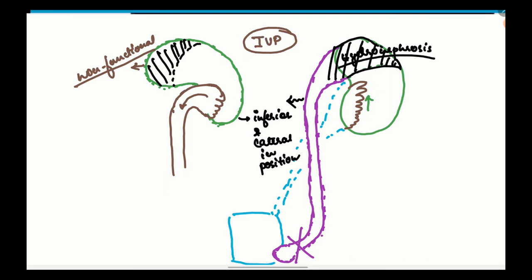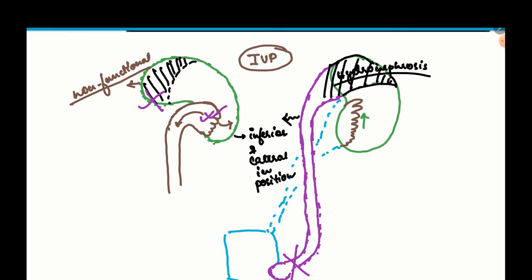The superior pole ureter always has a ureterocele at the ectopic site where it drains. Once the ureterocele becomes blocked, the superior pole undergoes hydronephrosis and droops down due to gravity. The inferior pole moves outward, pulling the lower pole pelvicalyceal system. This is the drooping lily sign.